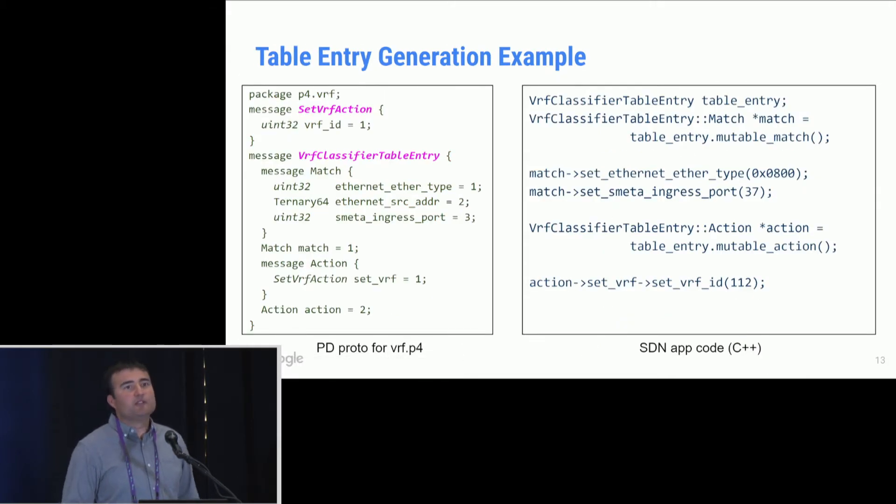Now, once we have this schema defined, how is the SDN app going to use the schema to program a flow entry? So again, the left-hand side is the schema that I just showed you. On the right-hand side is an example. Protobufs have very nice associated tools that let you, from the schema, generate C++ APIs or APIs in lots of different languages. So this is an example of an SDN app code in C++, where we have a VRF classified table entry variable being declared. And then we obtain a match object for that entry, and then populate that match object with the ether type and the ingress port values. And then we obtain the action object from table entry, and then set the action spec by defining the set VRF ID value here.